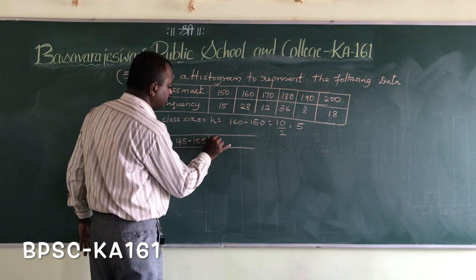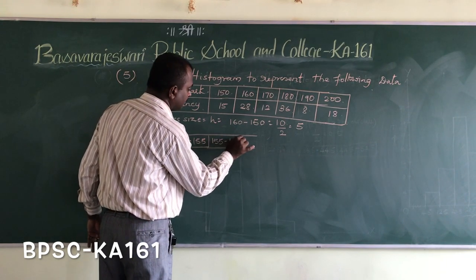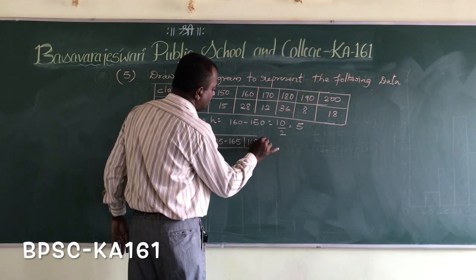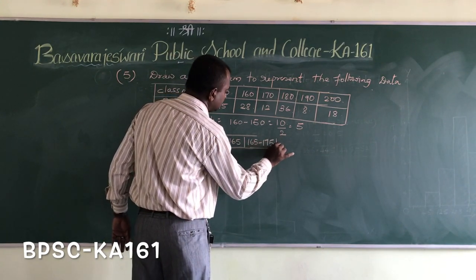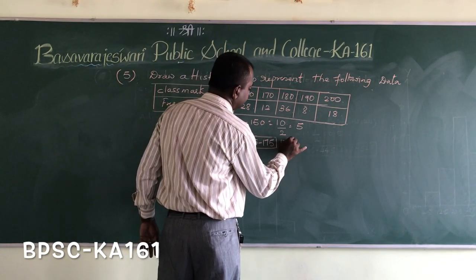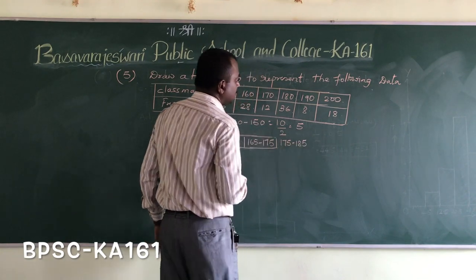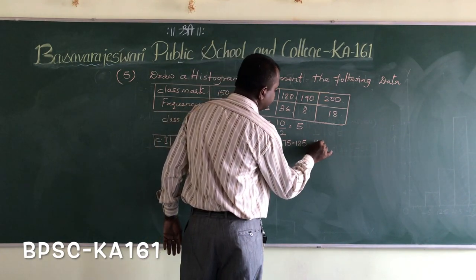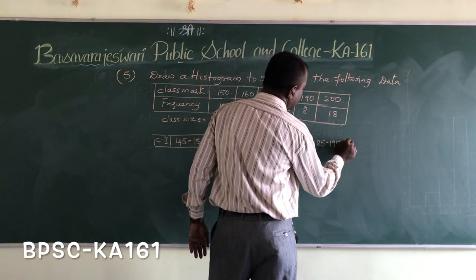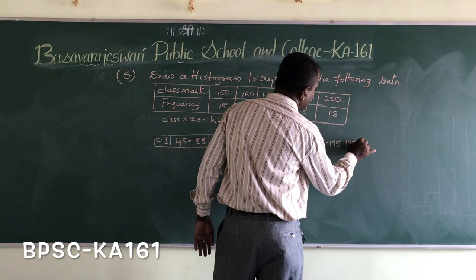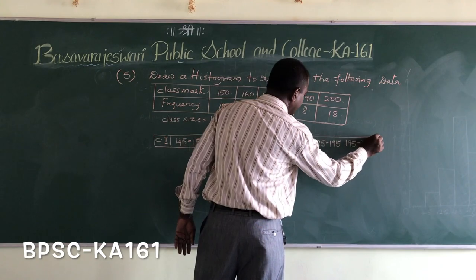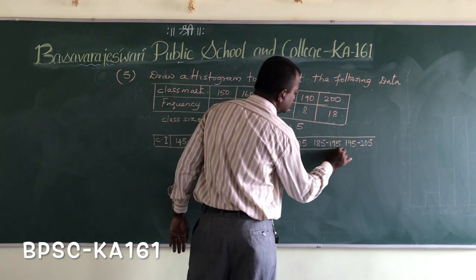The next class intervals are: 155 to 165, then 165 to 175, then 175 to 185, then 185 to 195. In this way we have to find out all the class intervals.